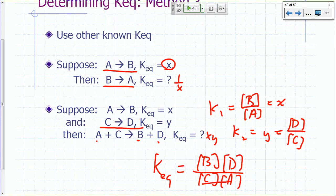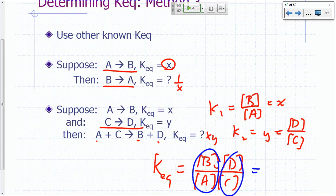And you can see that K3, KEQ for the overall reaction would just be B times D over C times A. Let me write it A times C. And you can identify this as K1 and this as K2, so this is X times Y.